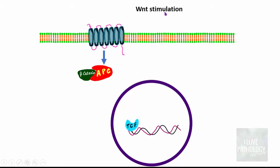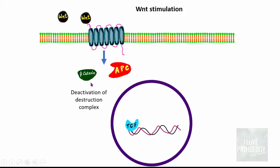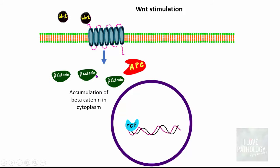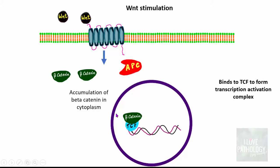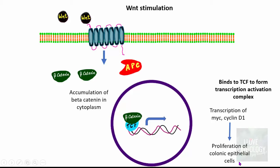During WNT stimulation, WNT molecules attach to the WNT receptor, sending a signal that deactivates the destruction complex. With the destruction complex deactivated, more and more beta-catenin accumulates in the cytoplasm. This accumulated beta-catenin then translocates into the nucleus and binds to TCF to form the transcription activation complex, activating transcription factors like MYC and cyclin D1, which leads to proliferation of colonic epithelial cells.